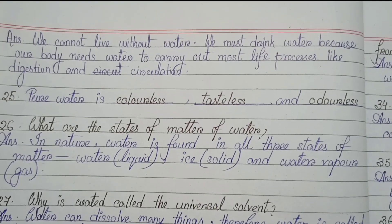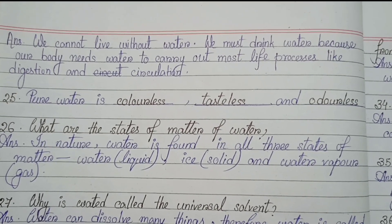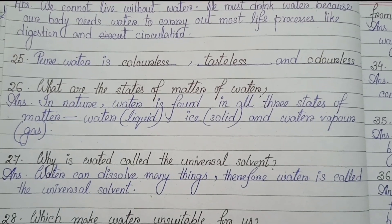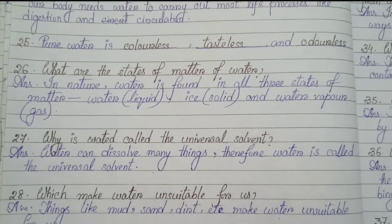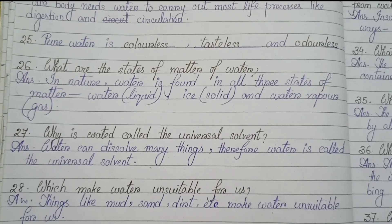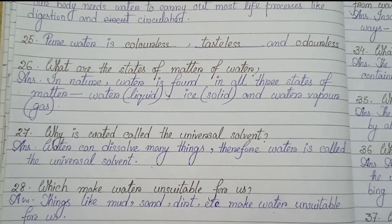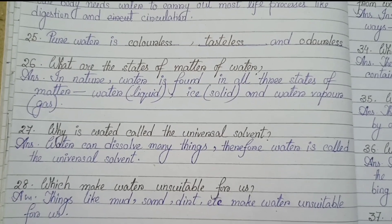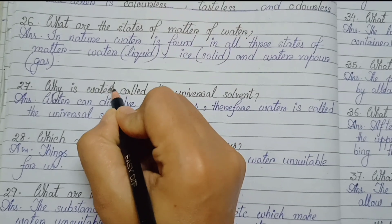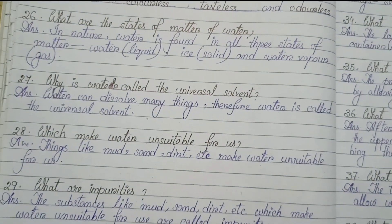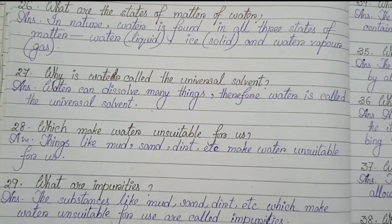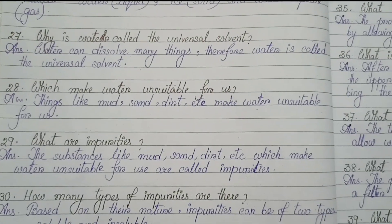Number 24: Why can't we live without drinking water? We cannot live without water because our body needs water to carry out most life processes like digestion and circulation. Number 25: Pure water is colorless, tasteless and odorless. Number 26: What are the states of matter of water in nature? Water is found in all three states — liquid form, ice as solid form, and water vapor as gaseous form. Number 27: Why is water called the universal solvent? Water can dissolve many things, therefore water is called the universal solvent.